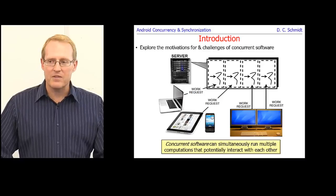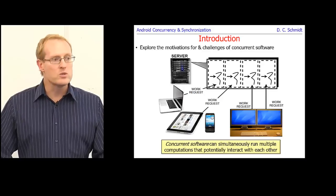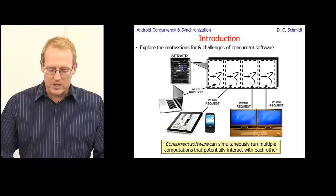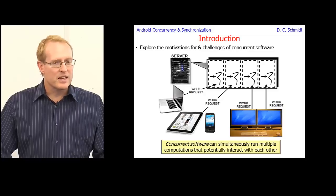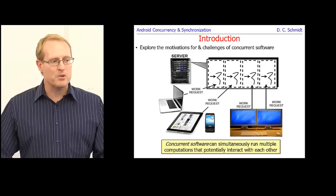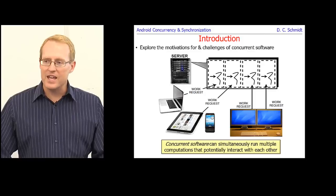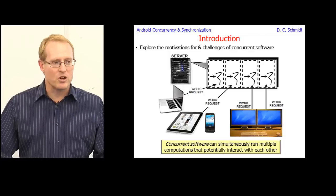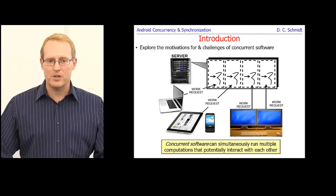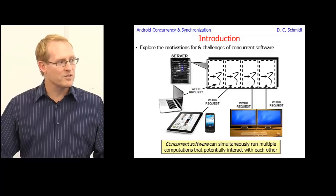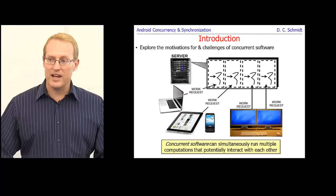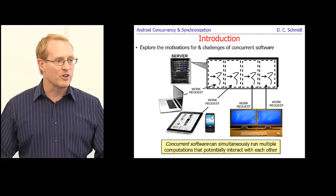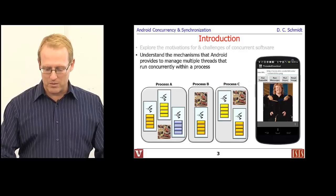I'll start by giving some of the motivation for using concurrency — why would you want to use it, and what makes it tricky. Concurrent software can simultaneously run multiple computations that may interact with each other. When concurrent computations interact, you have to understand synchronization and even scheduling to make sure your concurrent operations don't stomp all over each other.